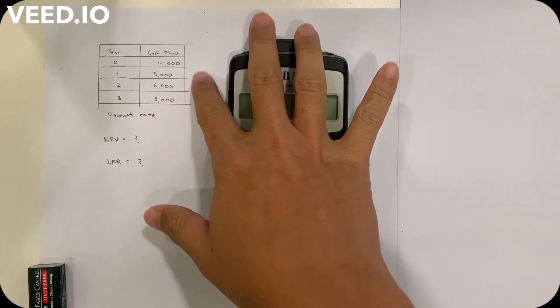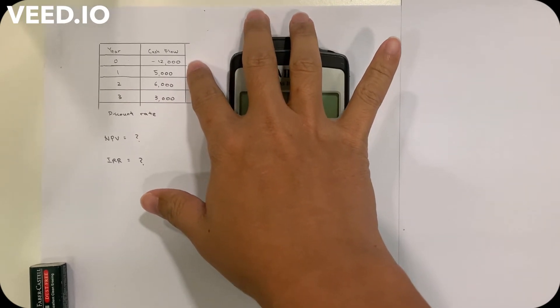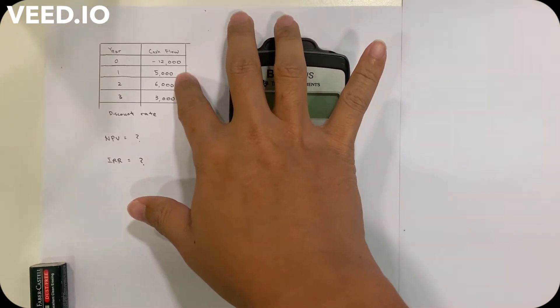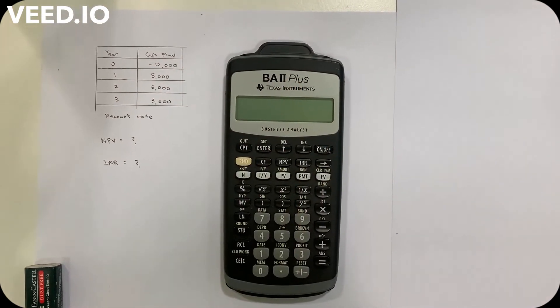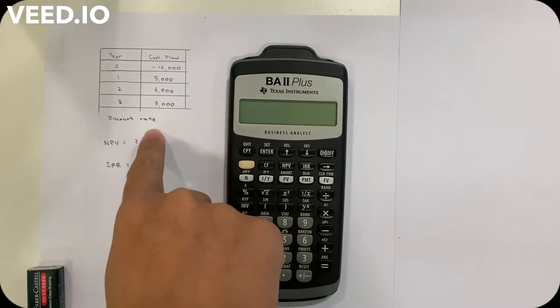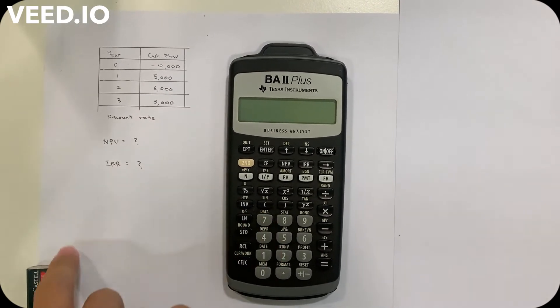When we are given all this cash flow, starting from year zero I have negative 12,000, then year one I have 5,000, year two I have 6,000, year three I have 3,000, and the discount rate here is 10%.